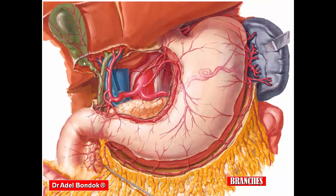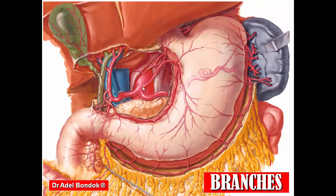The hepatic artery also gives a supra-duodenal artery, supplying the angle between the first and second parts of the duodenum, and two terminal hepatic branches — a left branch and a right branch — to the corresponding lobes of the liver.